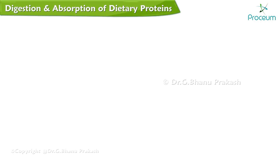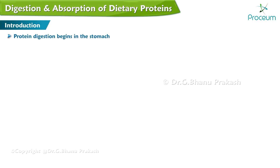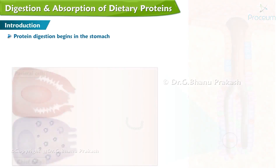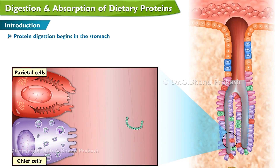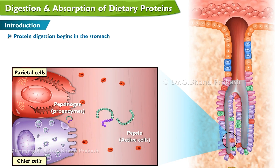Digestion and Absorption of Dietary Proteins. Protein digestion begins in the stomach by the action of gastric pepsins, which are released as proenzymes — pepsinogen 1 and 2 — and undergo autoactivation at acidic pH.